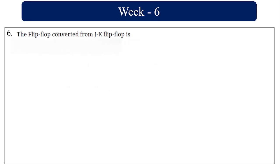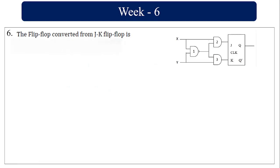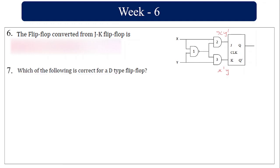For the flip-flop converted from a JK flip-flop: when you work through the calculation, the value becomes x·y̅ and x̅·y. Taking the inverse, we say it is a D flip-flop when x equals D and y equals D̅.